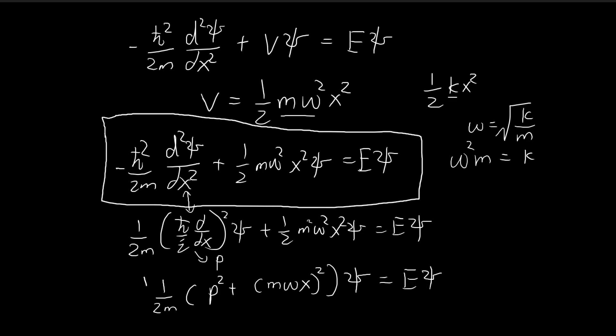So this is an alternative way to write our Schrödinger equation. And the reason why I've expressed this Schrödinger equation this way is that this expression will come in handy later on. So these two expressions are completely equivalent. This is just a different way of writing what we had over here.